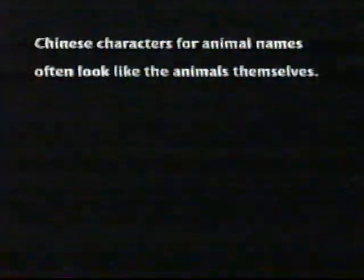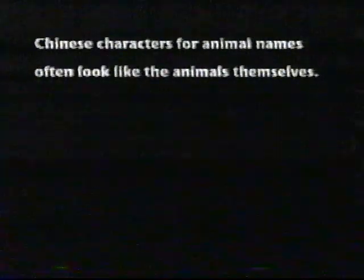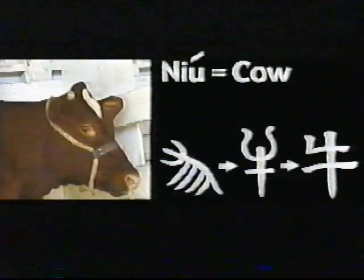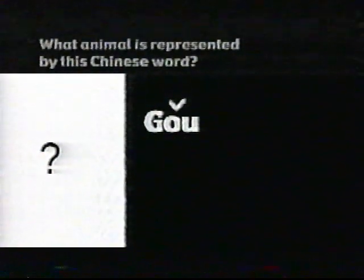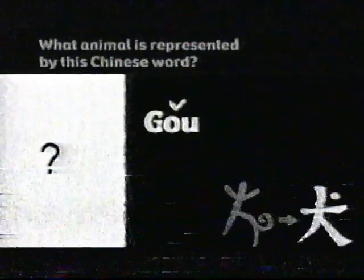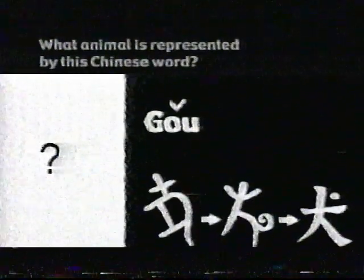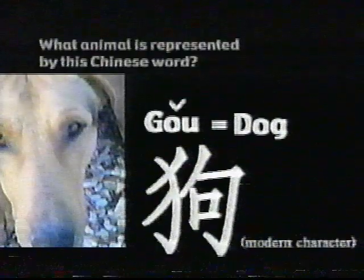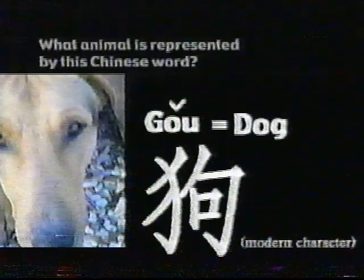Listen to the cat. You've learned that the Chinese characters for animals often look like the animals themselves. You've also learned that the Chinese names for the animals often sound like what the animals say. Here's your chance to try a Chinese see-and-say. What animal is represented by this Chinese word? The early character for this animal looks like this. This is a dog. Gou. The modern character for dog looks like this.